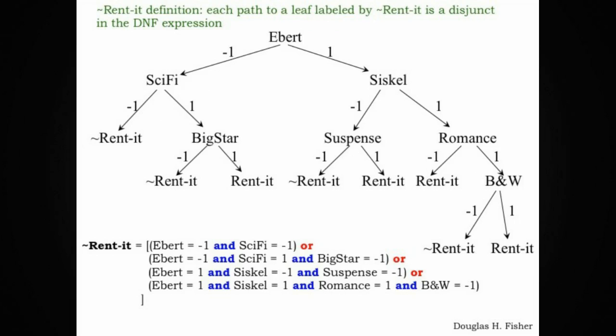So at the bottom, you see a disjunctive normal form representation for not rented. This is a disjunction of the four paths that lead to not rented leaves.